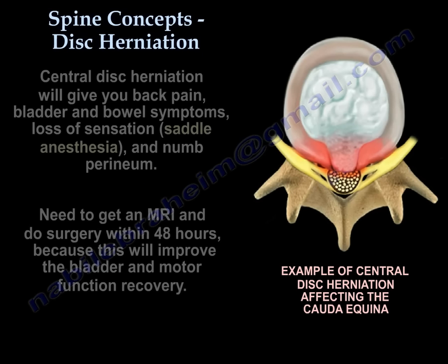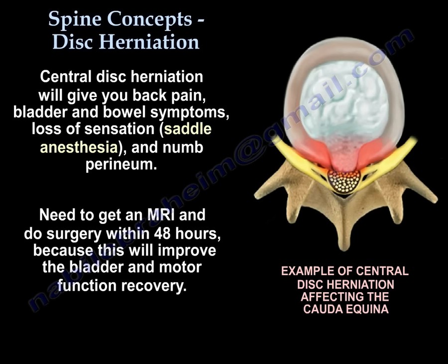A central disc herniation will give you back pain, bladder and bowel symptoms, saddle anesthesia, and a numb perineum. You need to get an MRI and you need to do surgery within 48 hours, because that will improve bladder and motor function recovery.